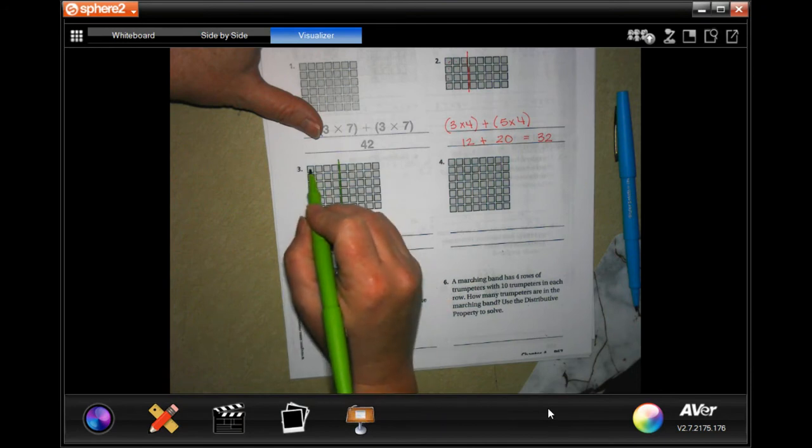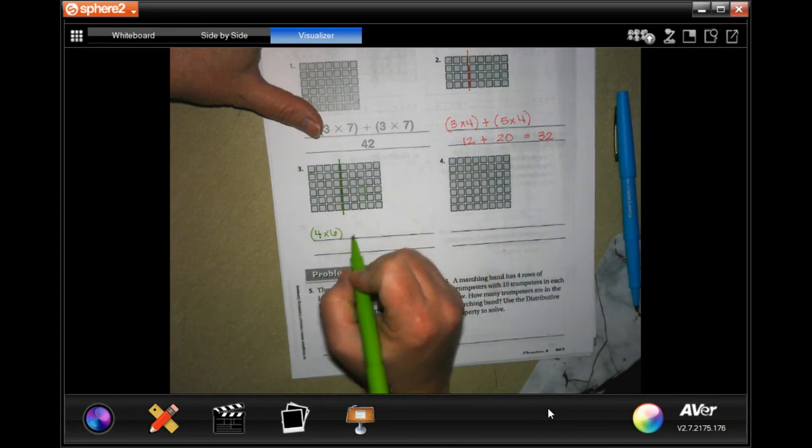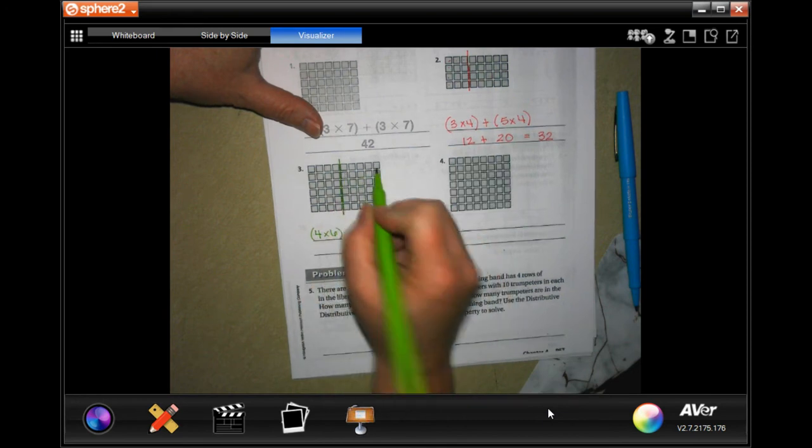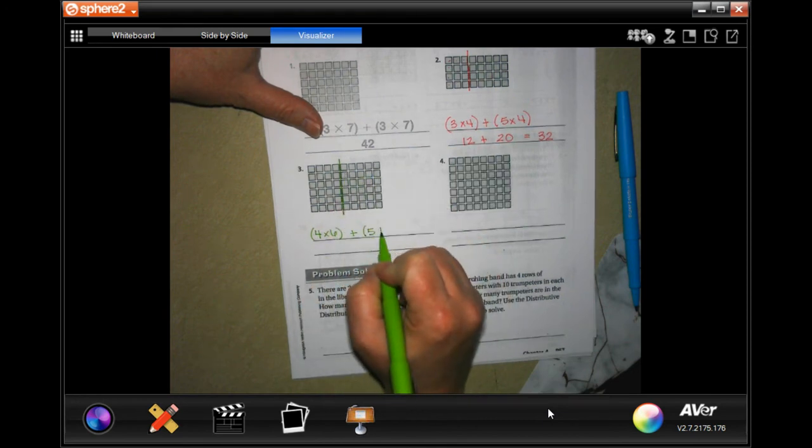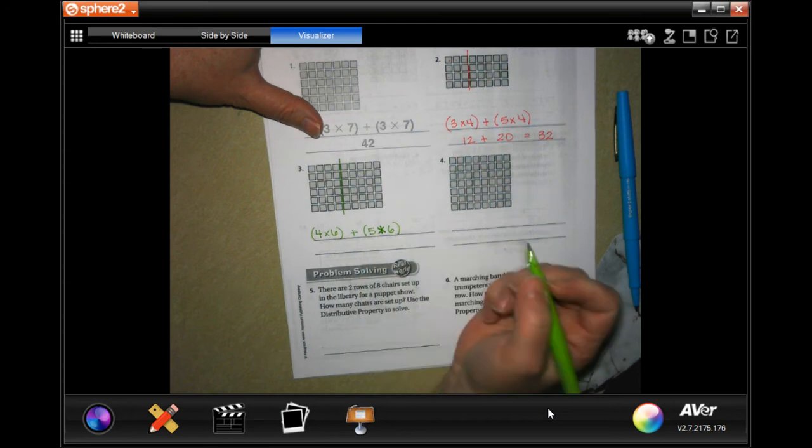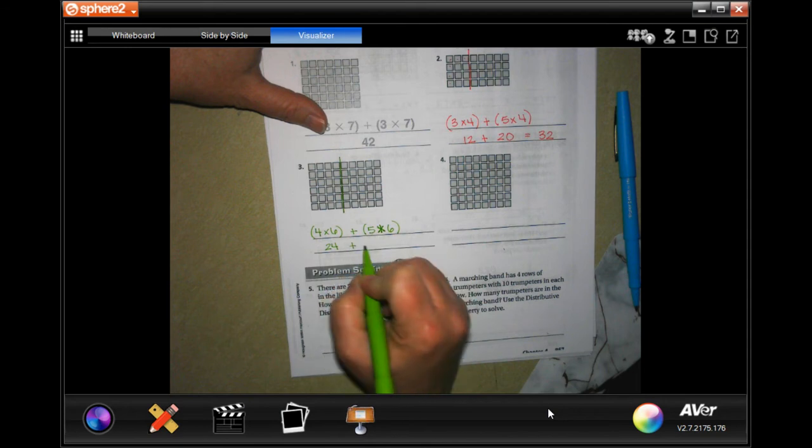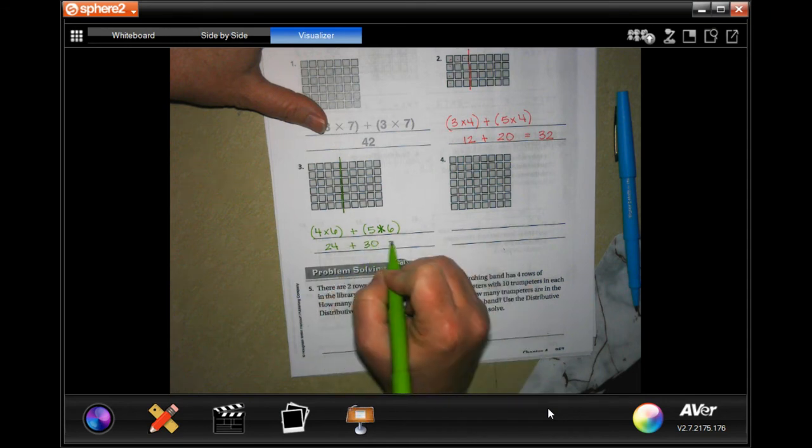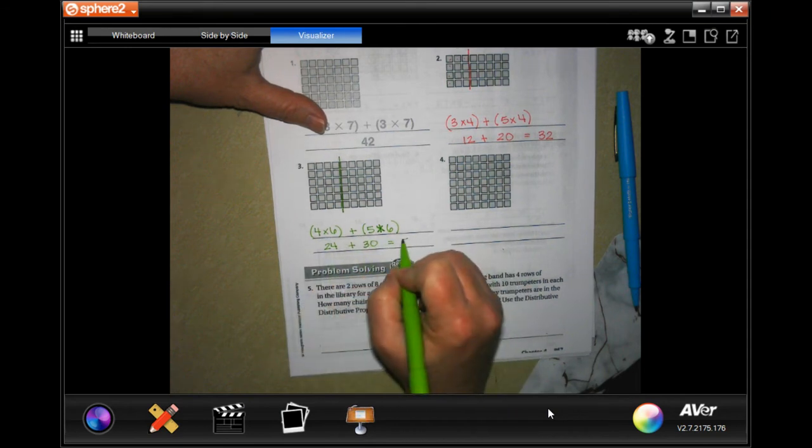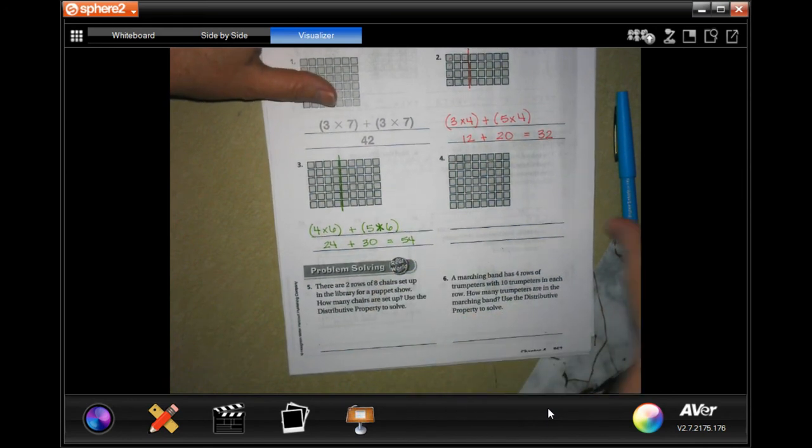Times one, two, three, four, five, six. I'm going to put that in parentheses, plus I left five times the same six. So now that leaves us with 24, plus five times six is 30, so now 24 plus 30 equals 54.